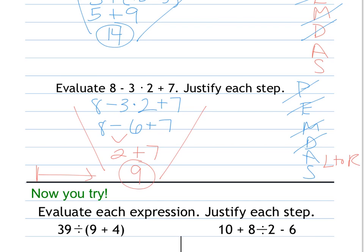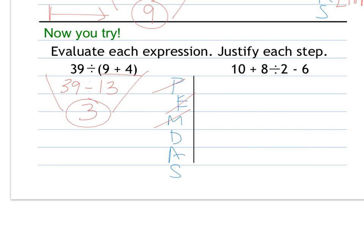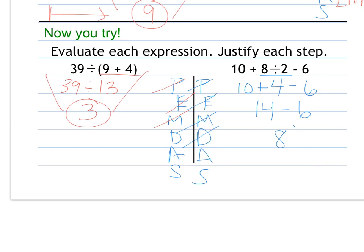Now would be a good place to try some on your own. Making my checklist: parentheses first — 39 divided by (9 plus 4) which is 13. No exponents, no multiplication. Division: 13 goes into 39 three times. Next: no parentheses, no exponents, no multiplication, but there is division — 8 divided by 2 is 4. So 10 plus 4 minus 6. Addition and subtraction go left to right: 14 minus 6, evaluated to 8.